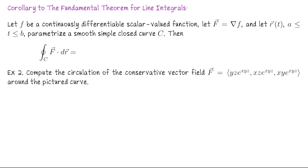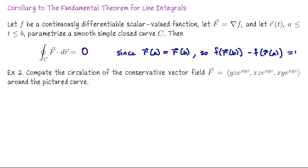Here's a corollary to the fundamental theorem for line integration: if we want to do the circulation of a conservative vector field, then it must be 0. That's because if we're doing a circulation integral, r(b) and r(a) are the same point. So when we do f(r(b)) minus f(r(a)), we're just going to get 0. So around any simple closed curve, the circulation of a conservative vector field is 0 — you don't have to parametrize, it's automatically 0.